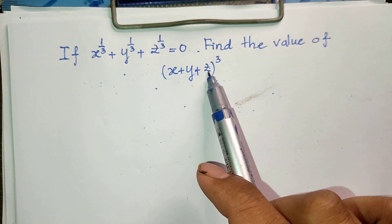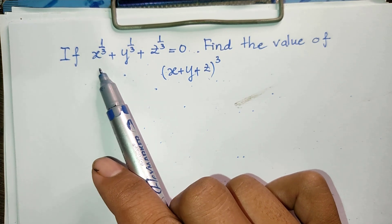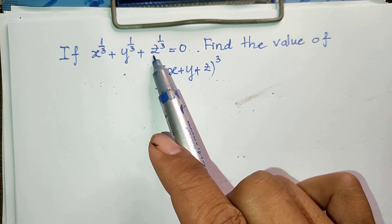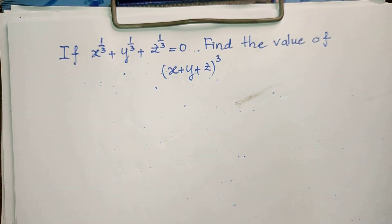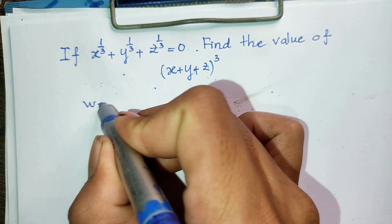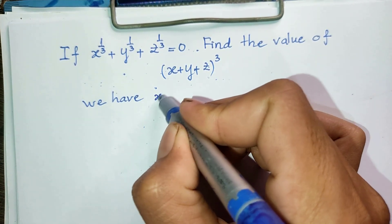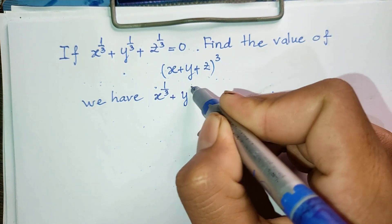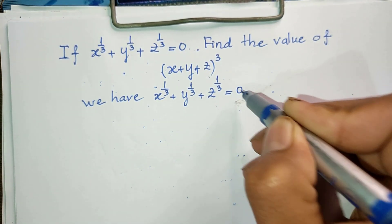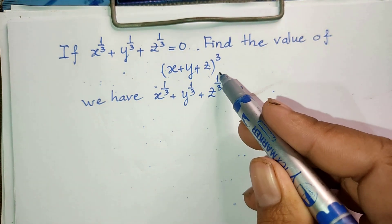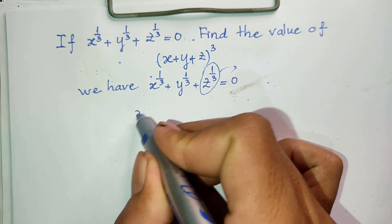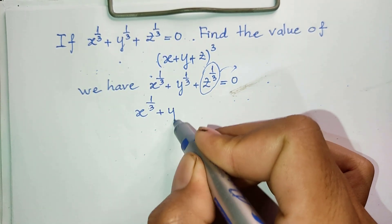To find the value of this equation, we must find the values of x plus y plus z. We see that x to the power 1/3 plus y to the power 1/3 plus z to the power 1/3 equals 0. Now we rearrange this equation: x to the power 1/3 plus y to the power 1/3 equals minus z to the power 1/3.